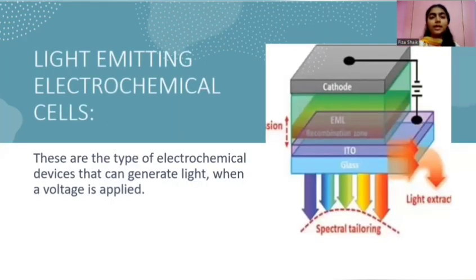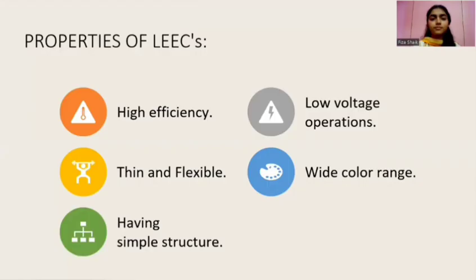Light emitting electrochemical cells are a type of electrochemical device that can generate light when a voltage is applied. Some of the properties of light emitting electrochemical cells are high efficiency, thin and flexible structure, simple structure, low voltage operation, and wide color range.